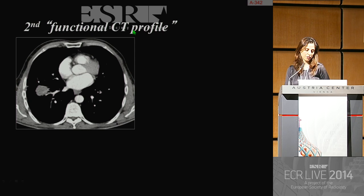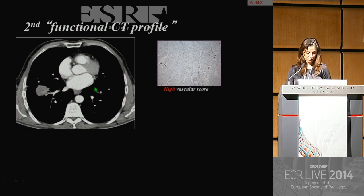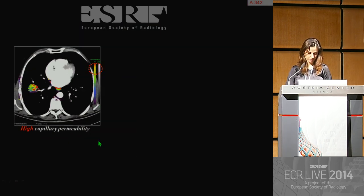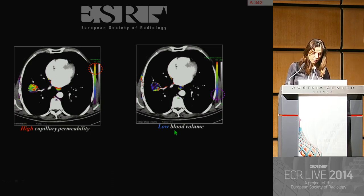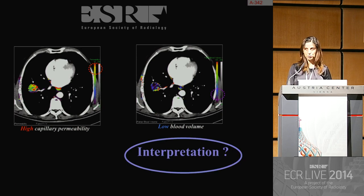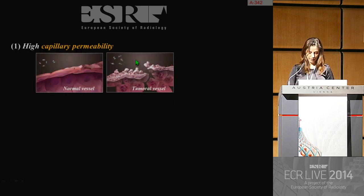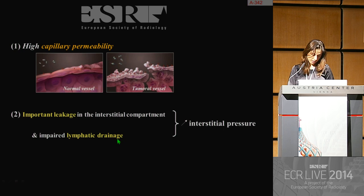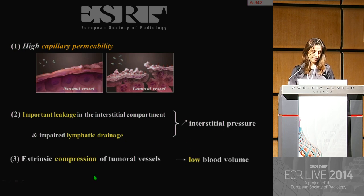There is a second functional CT profile of a tisular lesion showing high vascular score with high capillary permeability due to leaky tumoral vessels. In this case, the high capillary permeability is associated with low blood volume instead of high blood volume. How to explain this apparently discordant finding? The high capillary permeability is responsible for important leakage in the interstitial compartment. In the presence of impaired lymphatic drainage, there is an increase in interstitial pressure with extrinsic compression of tumoral vessels, explaining the low blood volume.